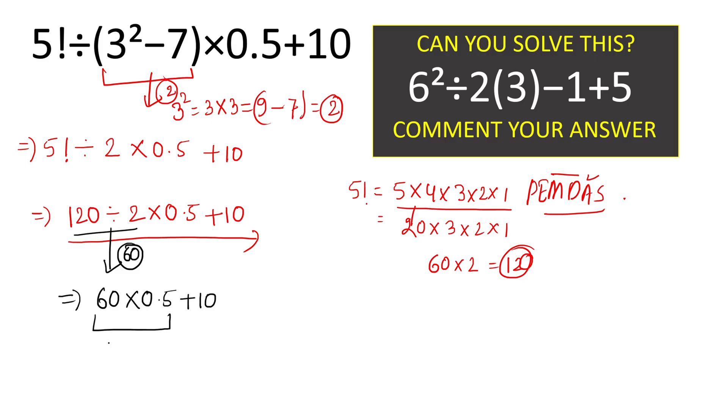Now we will operate this multiplication which will give result 60 times 0.5 will result what? 60 times 0.5 which equals to 30.